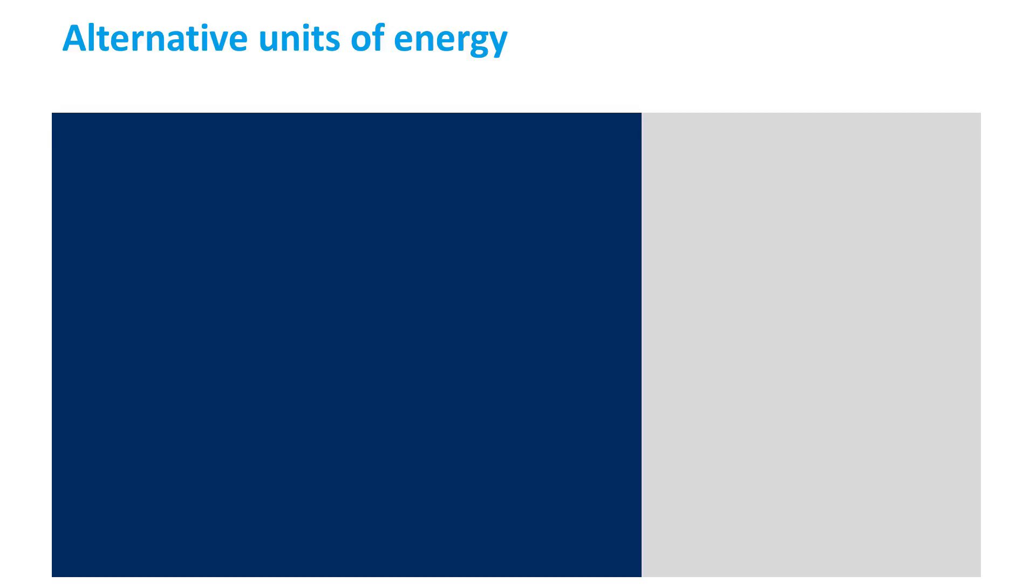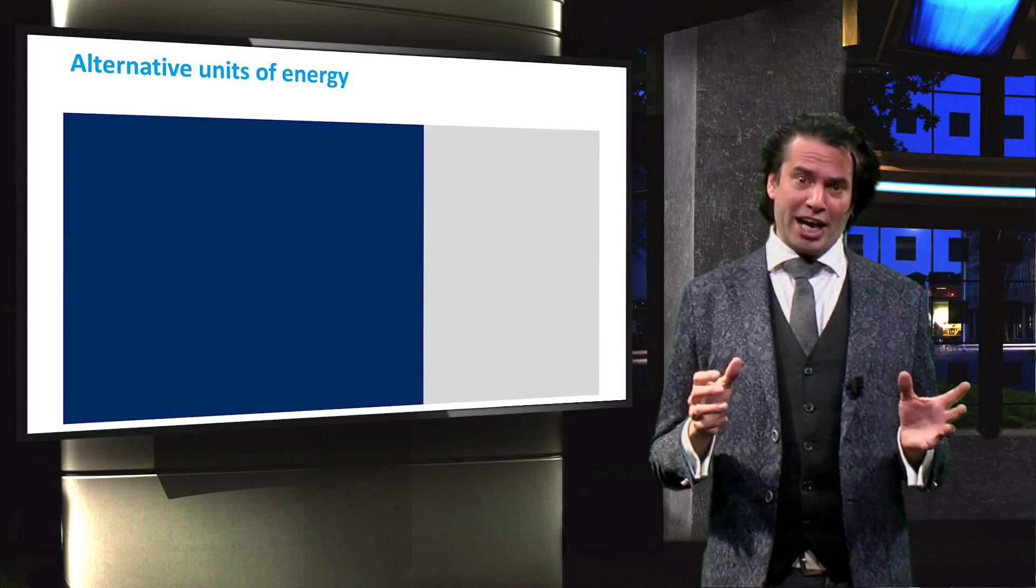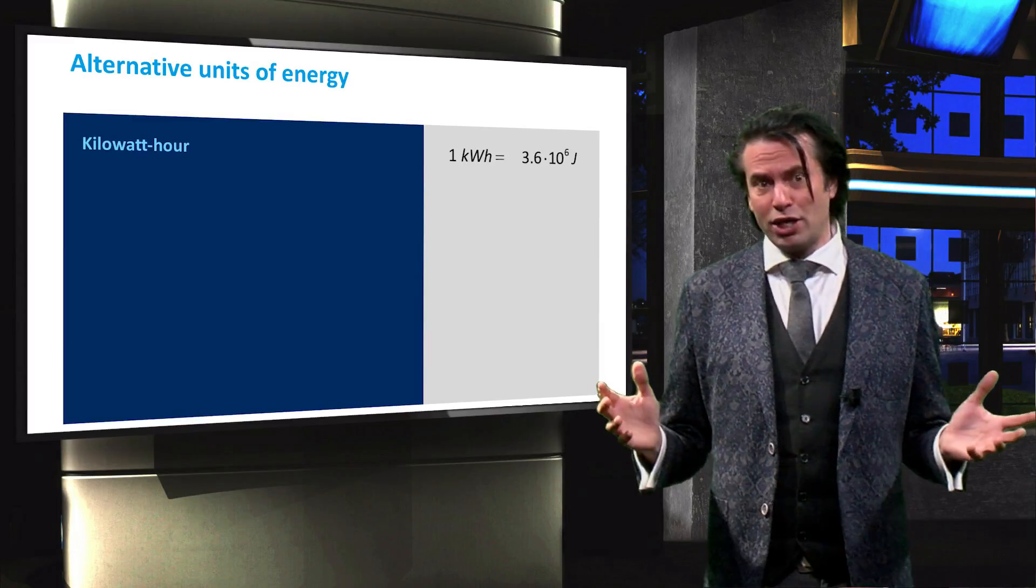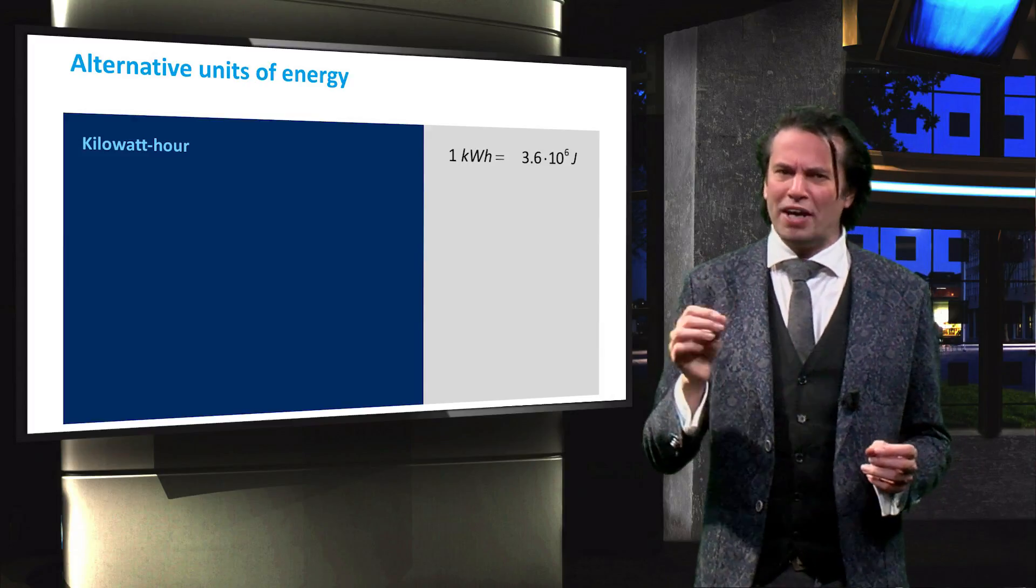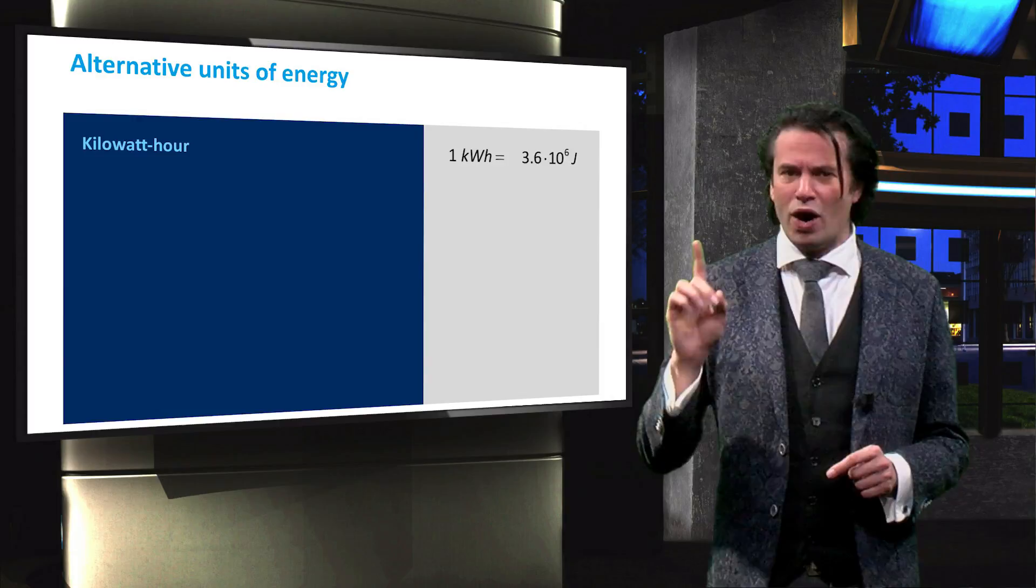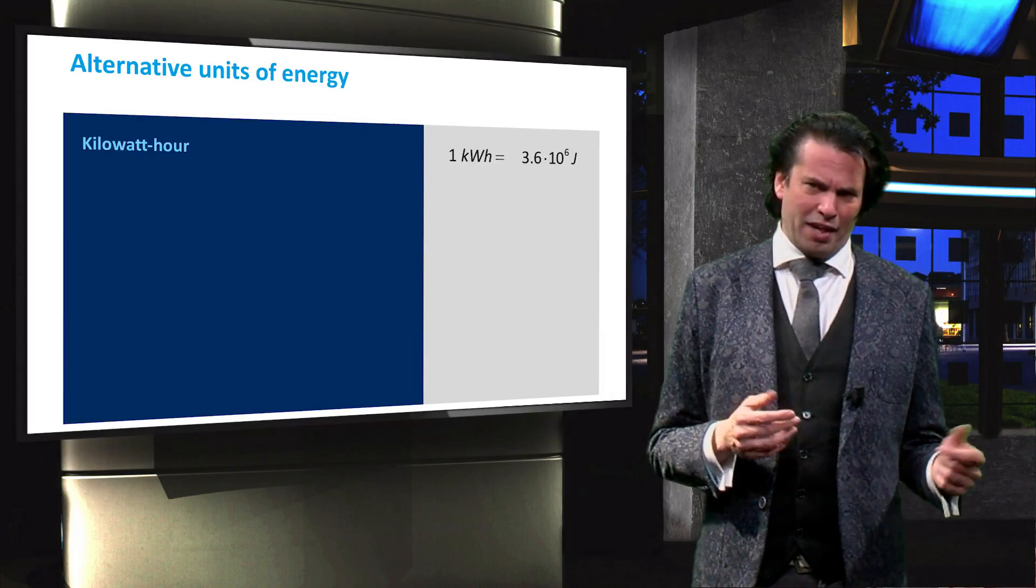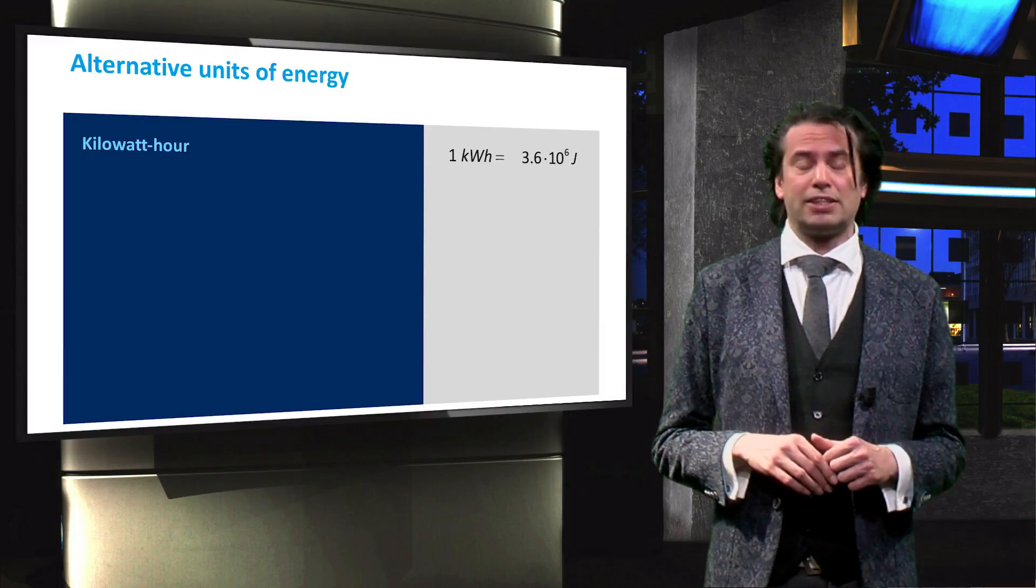Joules are not the only unit used to express a certain amount of energy. One joule is a very small amount compared to the human energy consumption. Therefore, a different unit of energy is used for the production and consumption of electrical energy, namely the kilowatt hour. One kilowatt hour, as the name implies, is the amount of energy consumed if a power of one kilowatt is applied for one hour. Since 1 kilowatt is equal to 1000 joules per second, and there are 3600 seconds in an hour, 1 kilowatt hour is equal to 3.6 megajoules.